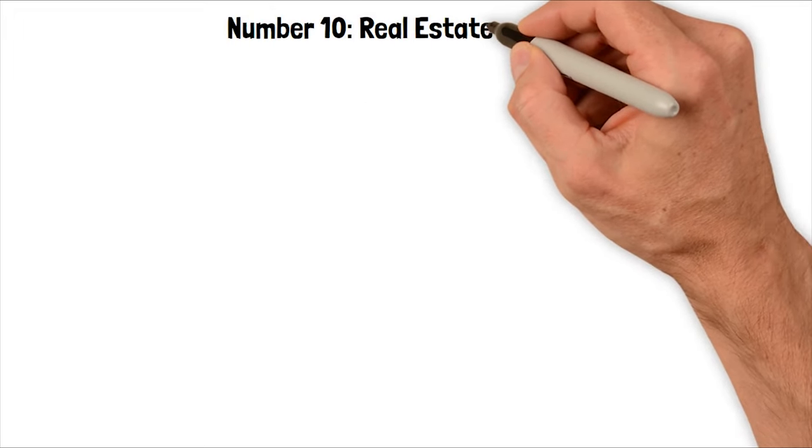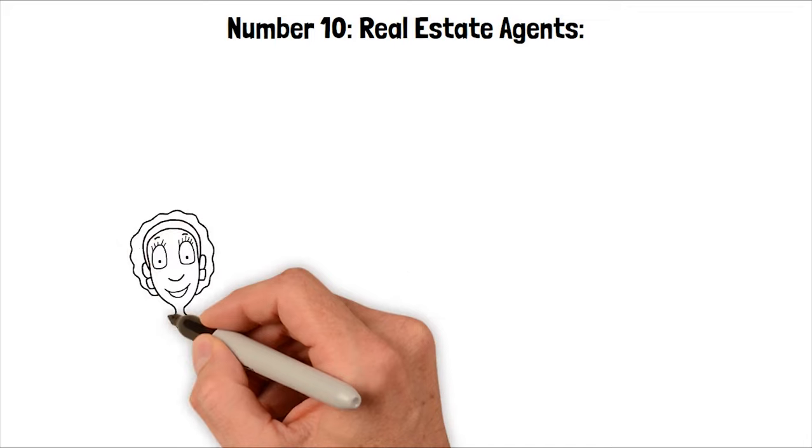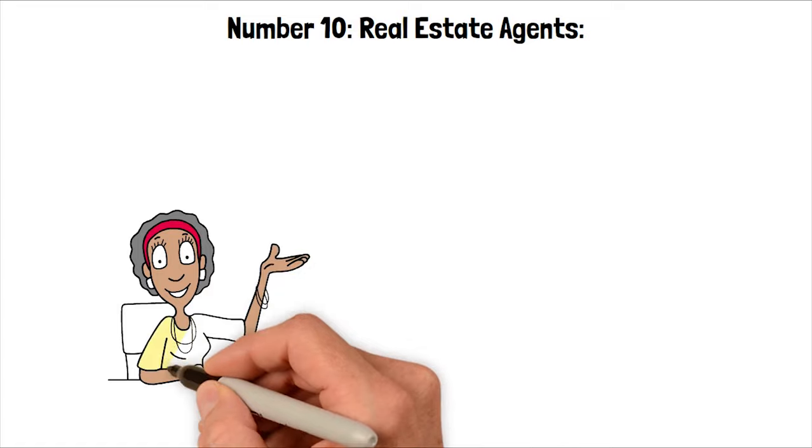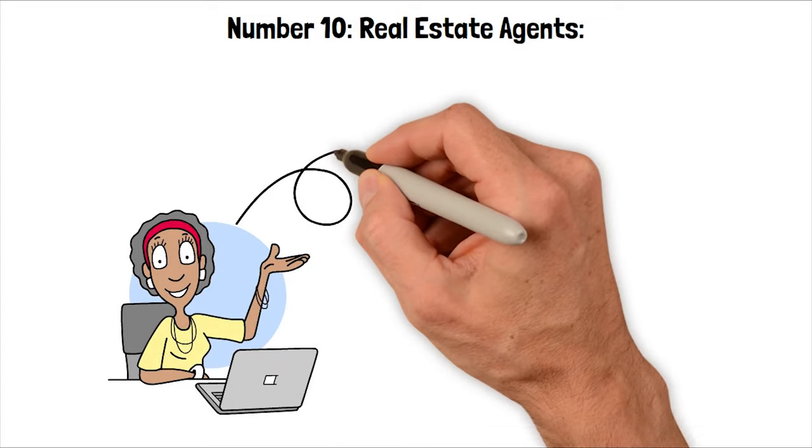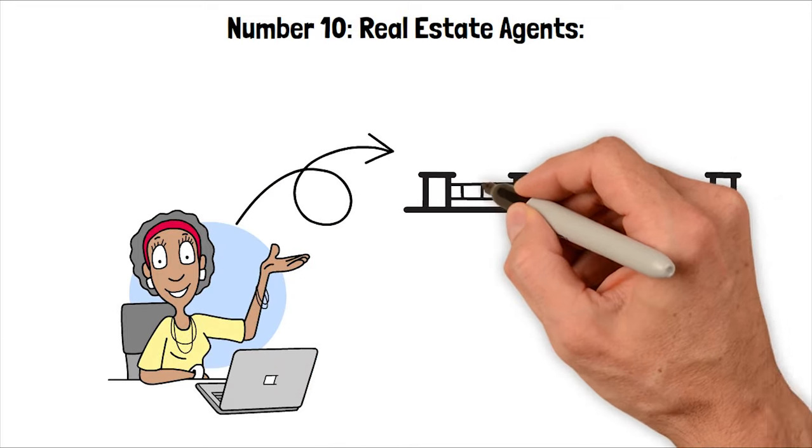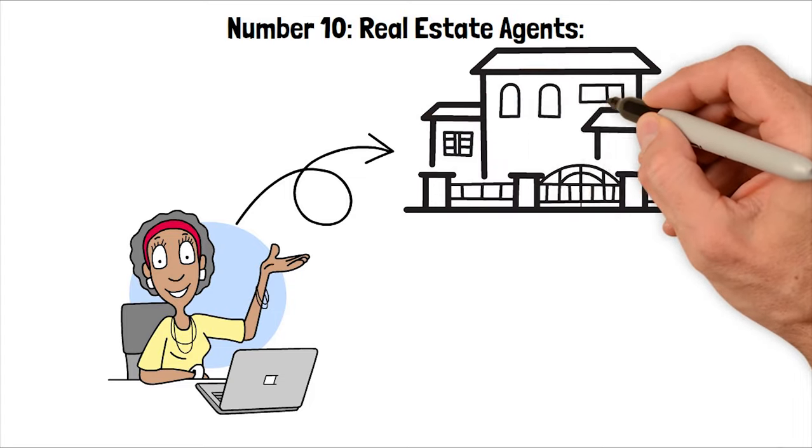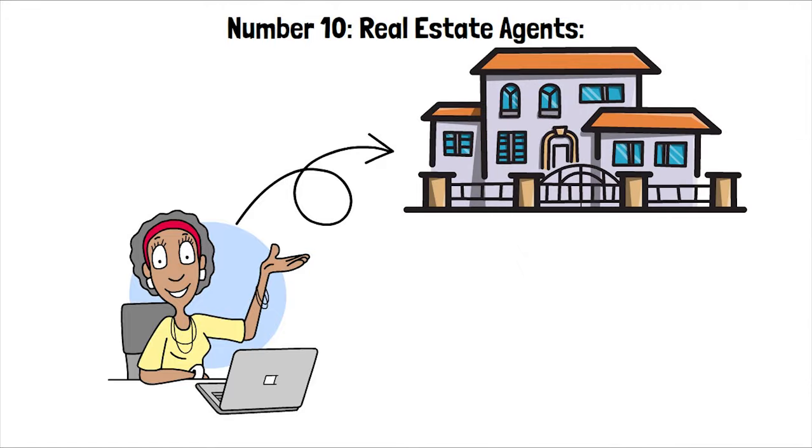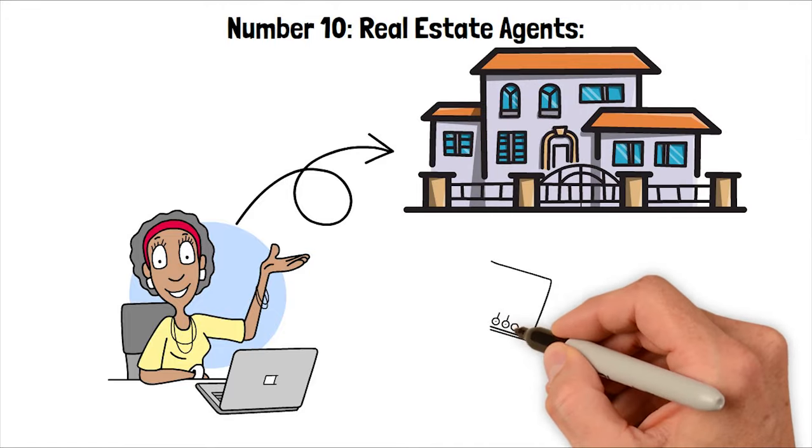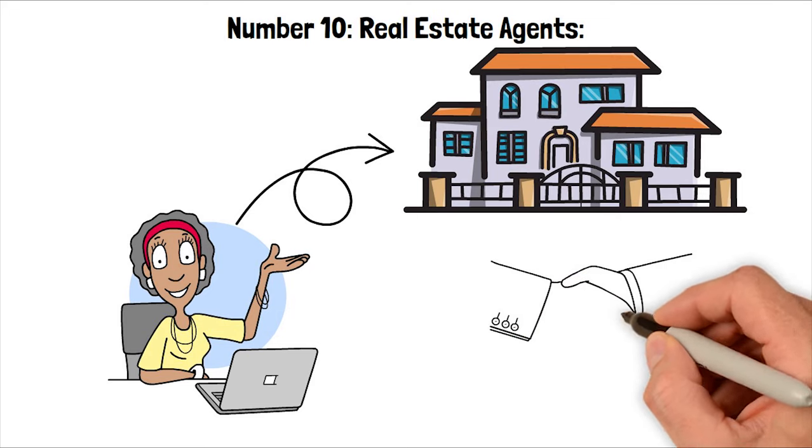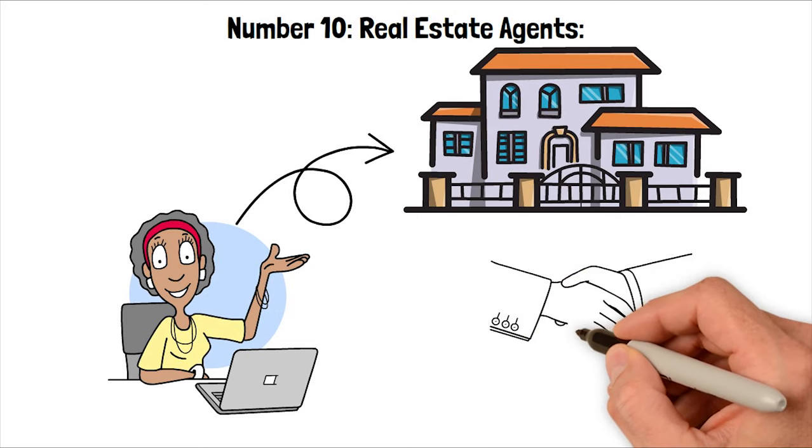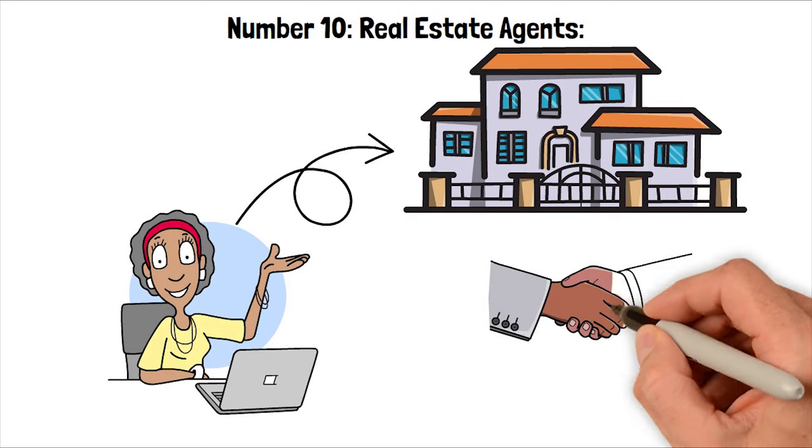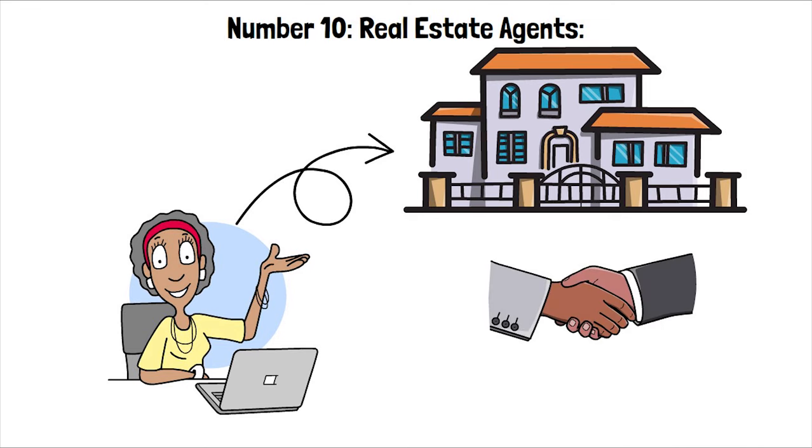Number 10. Real estate agents. Real estate agents are seeing changes with the introduction of AI-powered platforms. These platforms use advanced algorithms to help buyers and sellers. Buyers get personalized property recommendations, while sellers can optimize their listings and manage administrative tasks more efficiently. This shift allows agents to focus on building client relationships and providing tailored guidance. While AI may disrupt some traditional practices, it also offers opportunities for agents to enhance their services and stay competitive in the evolving real estate market.